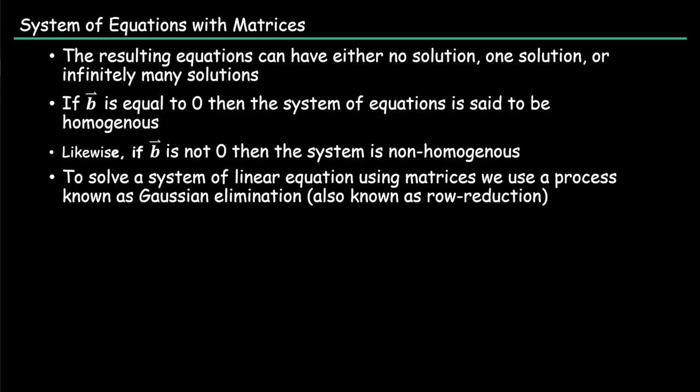With row reduction, there are three things that you can only do with the system of linear equation. The first one is that you're able to interchange the position of two equations. If we had some equation AX plus BY equals C, and then DX plus EY equals F, you can swap these two and have them be DX plus EY equals F, and then the bottom would be AX plus BY equals C.